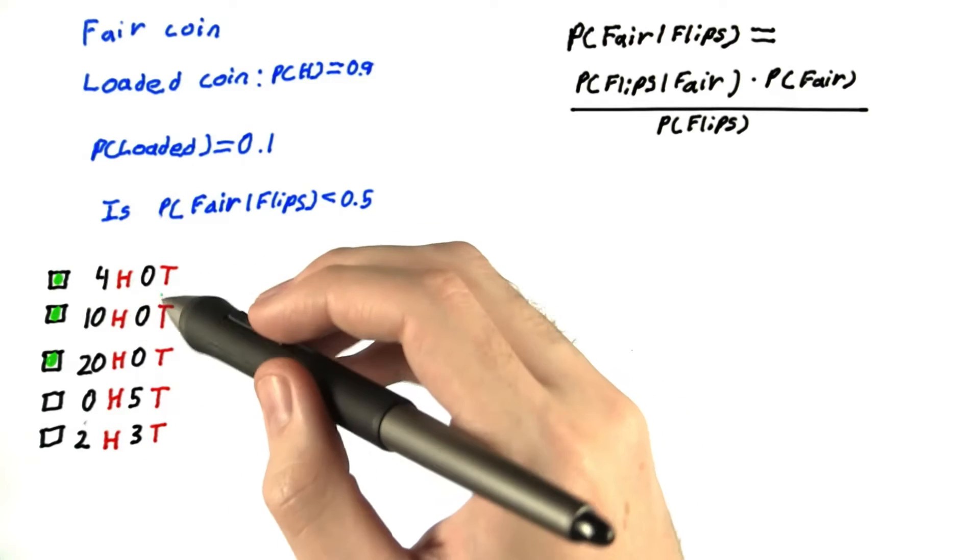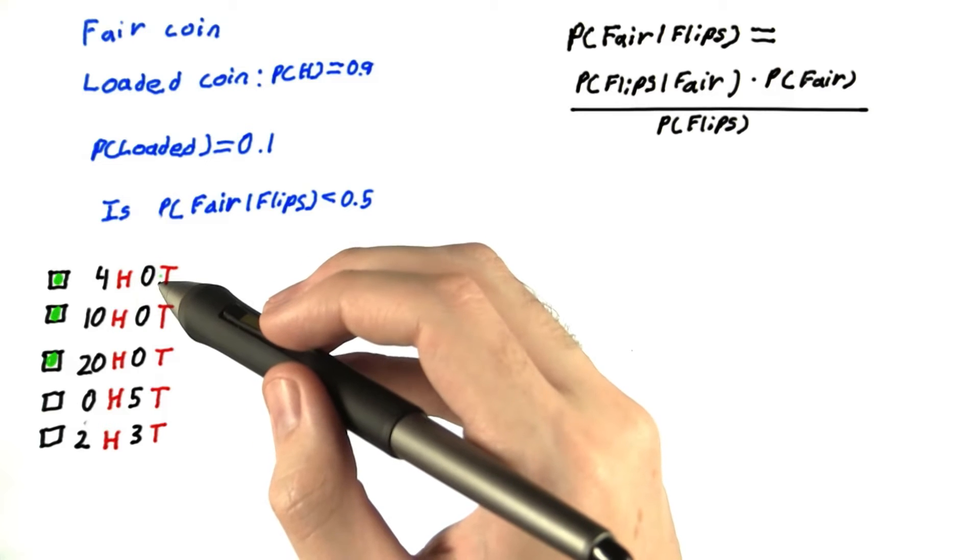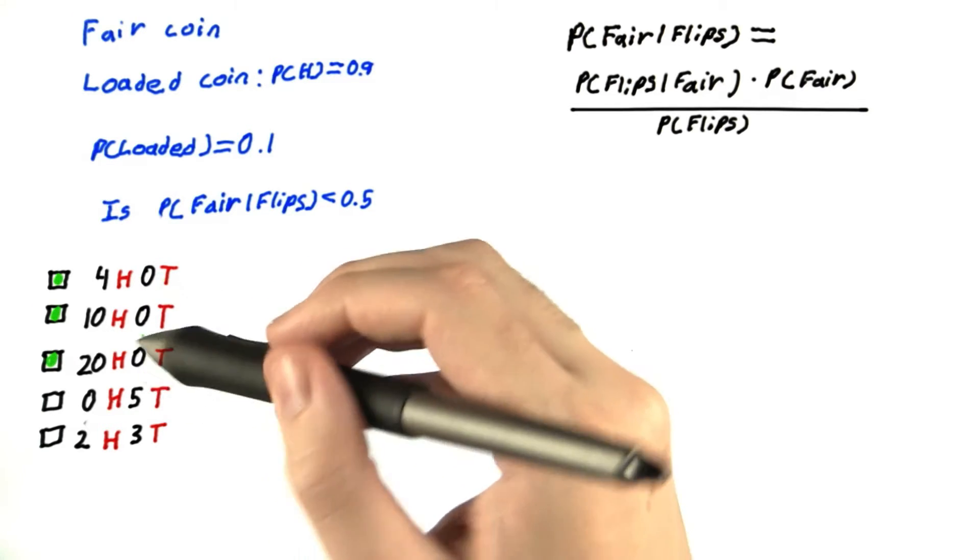We can also say that if four heads in a row is sufficient evidence that we have a loaded coin, 10 and 20 heads should be too.